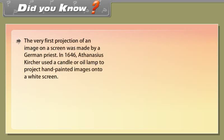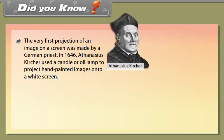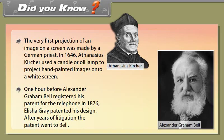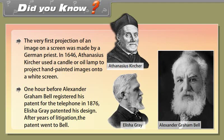The very first projection of an image on a screen was made by a German priest in 1646, Athanasius Kutcher, who used a candle or oil lamp to project hand-painted images onto a white screen. One hour before Alexander Graham Bell registered his patent for the telephone in 1876, Elisha Gray patented his design. After years of litigation, the patent went to Bell.